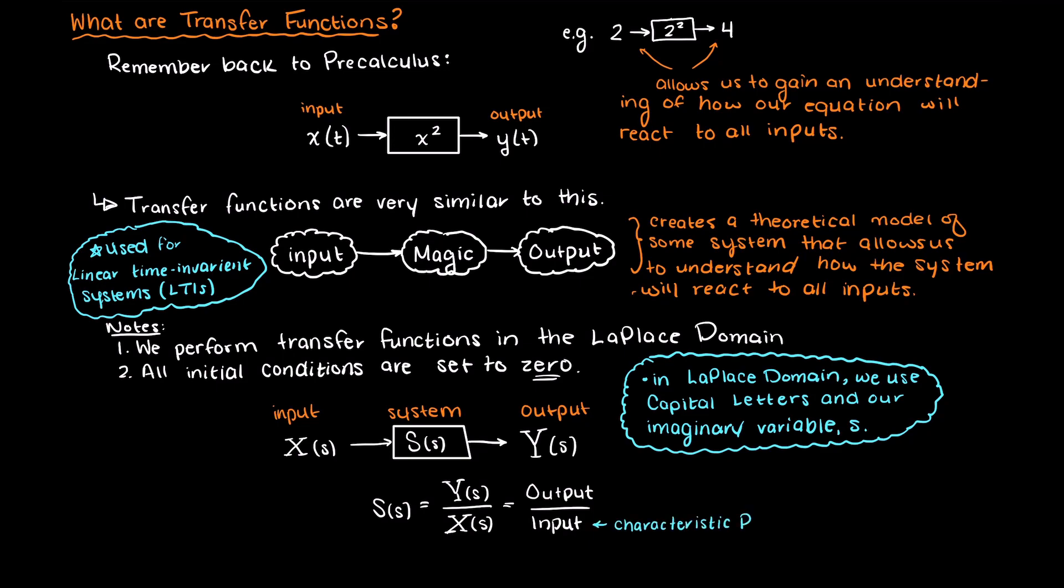Just as a note, the bottom term is called our characteristic polynomial, and its roots decide where our poles will be located at. The roots of the top polynomial tell us where our function's zeros will be at. We will talk about this more in coming videos though.